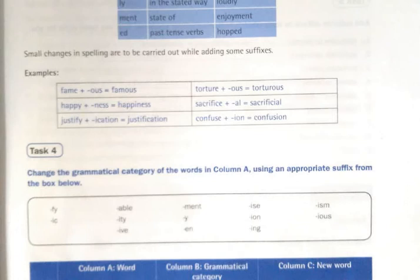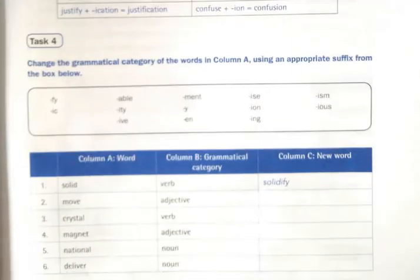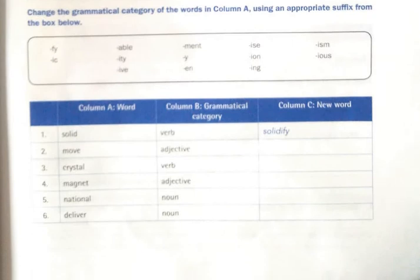Now we have task 4. Change the grammatical category of words in column A using an appropriate suffix from the box below. They are given a set of suffixes in the box. We have to use them to fill column C. So column A we have the word, column B we have the grammatical category mentioned, and column C the new word. The first one is done for you. It is solid. You have to make it into a verb to get solidify.